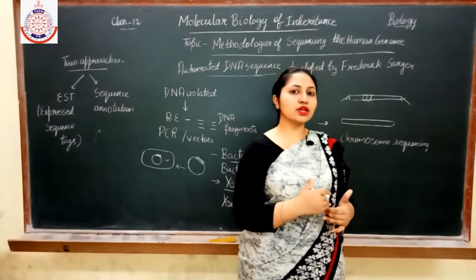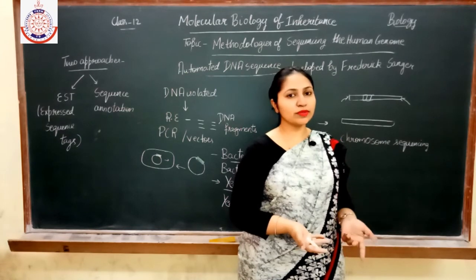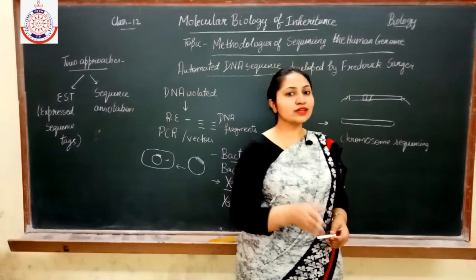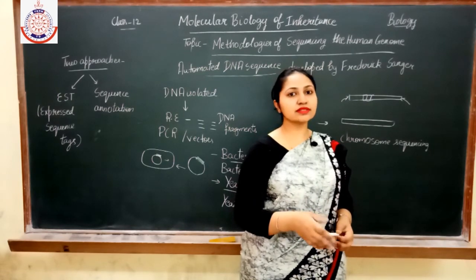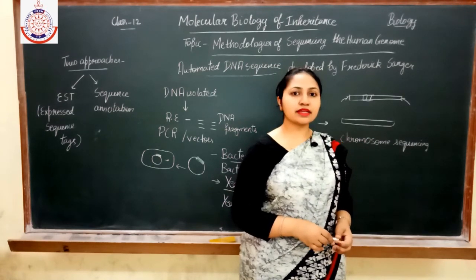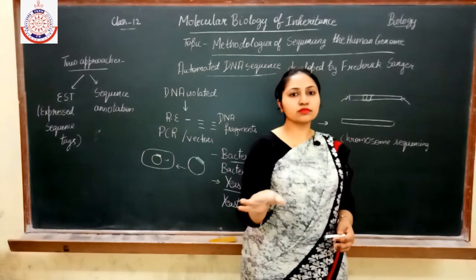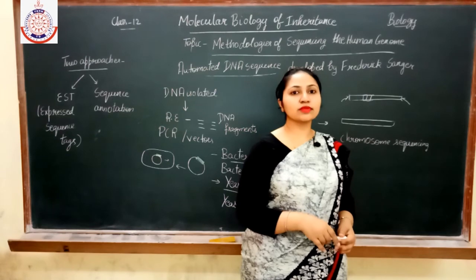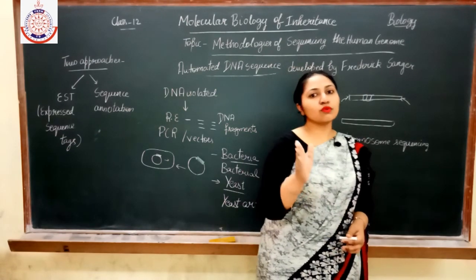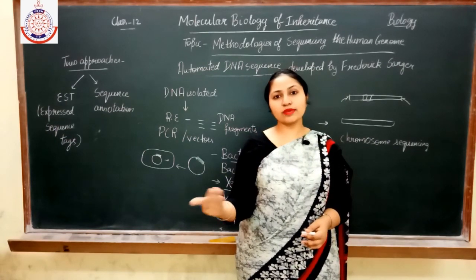When all the chromosomes are sequenced, we come to know the sequencing of the human genome, because the human genome consists of chromosomes only. There are around 22 pairs of autosomes and one pair of sex chromosomes — X and Y. So all 22 autosome chromosomes as well as the sex chromosomes X and Y are sequenced, and in this way we come to know the sequencing of the human genome.